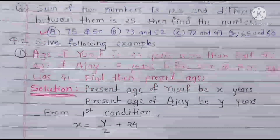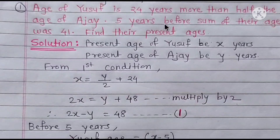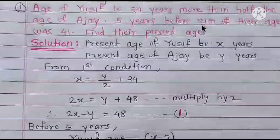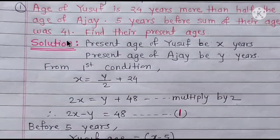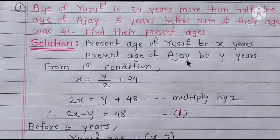Question 2: solve the following examples. First: age of Yusuf is 24 years more than half the age of Ajay. Five years before, the sum of their ages was 41. Find their present ages. Solution: let present age of Yusuf be X years and present age of Ajay be Y years.